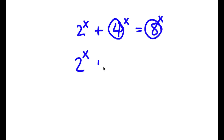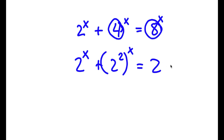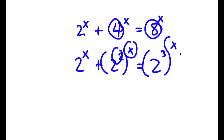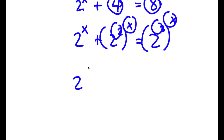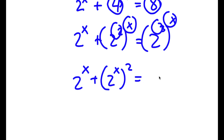So now I have 2 to the power of x plus 2 squared to the power of x is equal to 2 to the power of 3 to the power of x. Now I can actually switch the places of these two exponents. So now I get 2 to the power of x plus 2 to the power of x to the power of 2 is equal to 2 to the power of x to the power of 3.